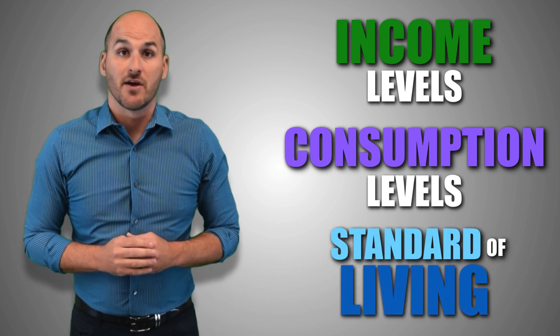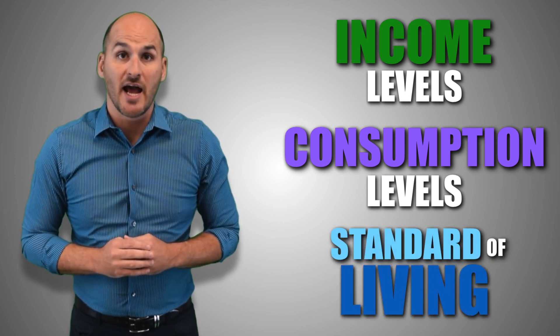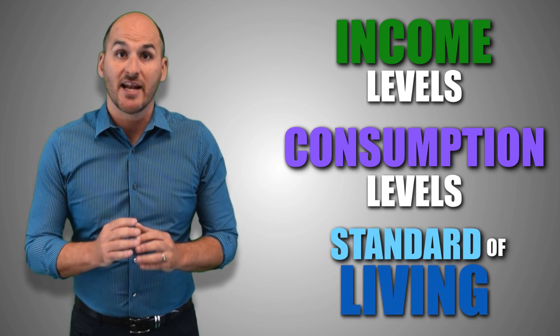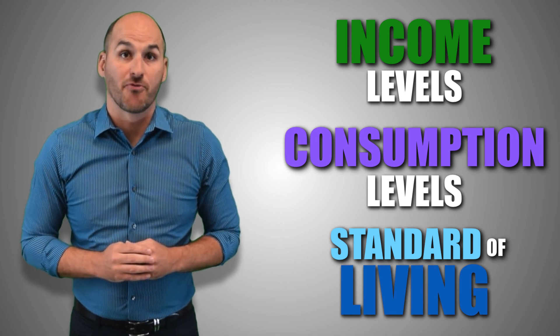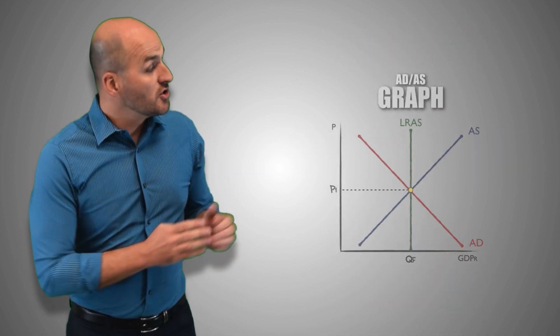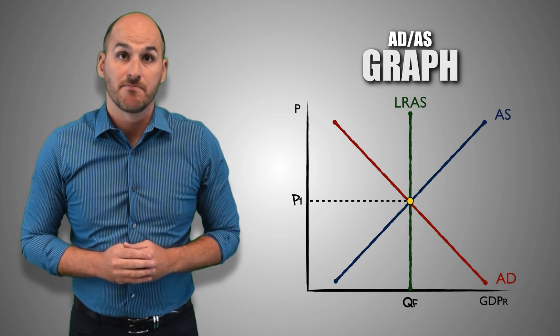In this video, we're going to investigate how long-run economic growth and contraction affect economic performance and important economic indicators using the aggregate demand and aggregate supply graph. Let's begin with a historical example.